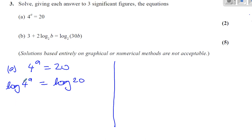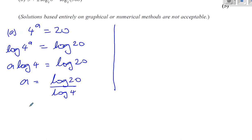Now I can use the power law to say that A times log to the base 10 of 4 equals log to the base 10 of 20. So therefore A is going to be log to the base 10 of 20 over log to the base 10 of 4, which I can then write the answer for.